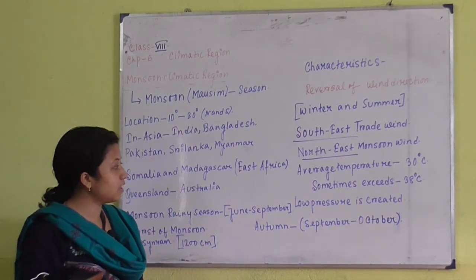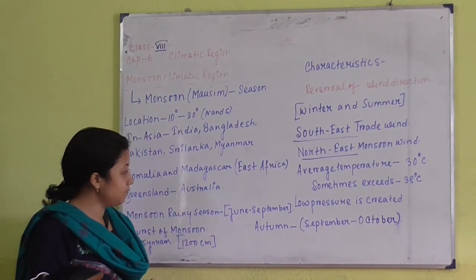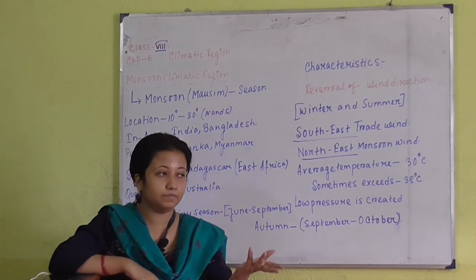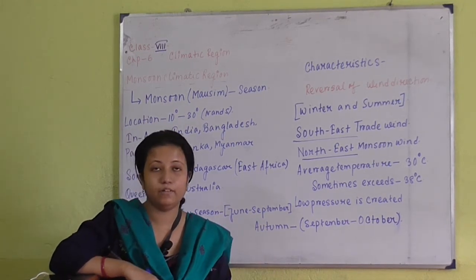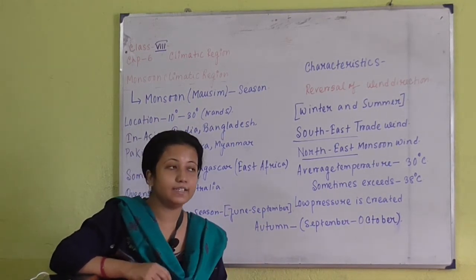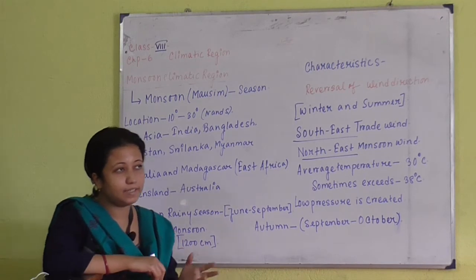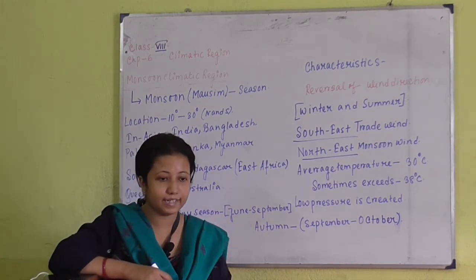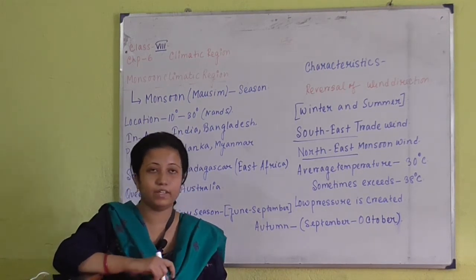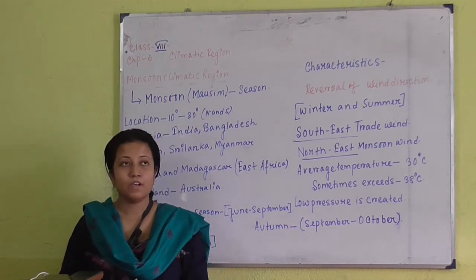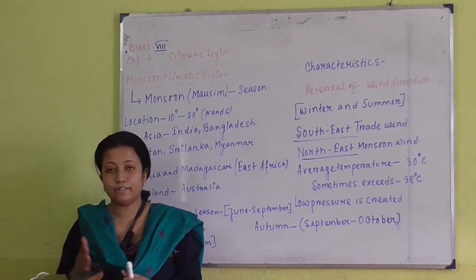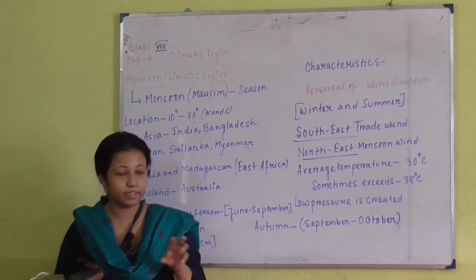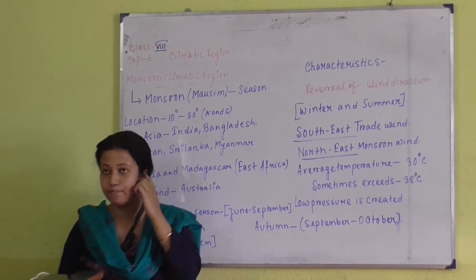Then comes autumn, from October to mid-November, when the weather remains pleasant. After that we have the winter months. This is the general pattern of monsoon type of climate wherever it prevails.